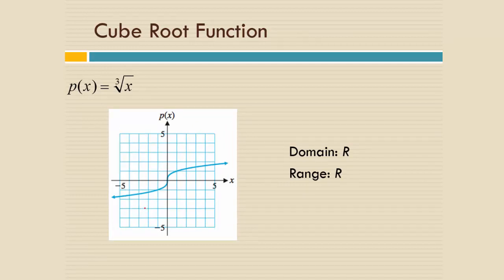Cube root of x. Cube root of x, the three key points are 0, 0, 1, 1, and negative 1, negative 1, exactly the same as x cubed.